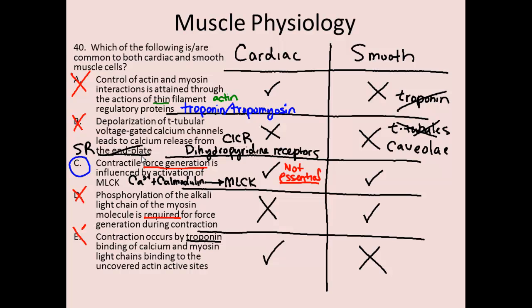We were able to go through each of the responses and eliminate D and E as well. The correct answer is response C — myosin light chain kinase controls the contractile force generation of cardiac muscle, although it's not essential, and it is also the main control mechanism by which smooth muscle contraction is controlled. Hopefully this clarified your understanding of cardiac and smooth muscle function. Please let me know if you have any further questions.